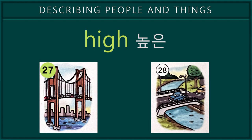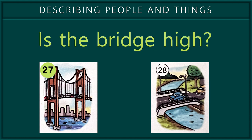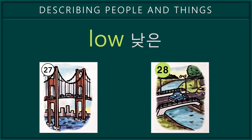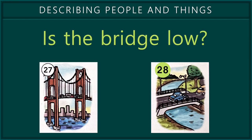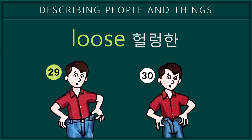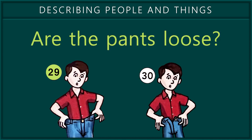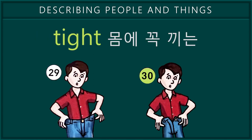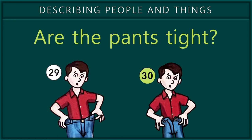27. High. Is the bridge high? 28. Low. Is the bridge low? 29. Loose. Are the pants loose? 30. Tight. Are the pants tight?